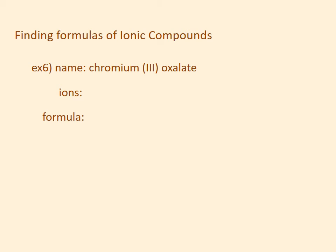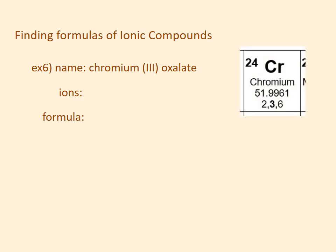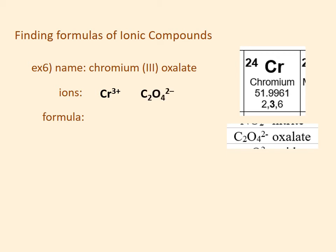Example 6: chromium(III) oxalate. I look up chromium on the periodic table to find its symbol. I know it's taking the plus 3 charge because I have a 3 in Roman numerals in the name. I look up oxalate on the common negative ion list — that's C₂O₄ with a 2 minus charge. I've got a plus 3 and a minus 2. The lowest common multiple of 3 and 2 is 6. So to get a plus 6 I will need 2 chromiums, and to get a minus 6 on the back I will need 3 oxalates.